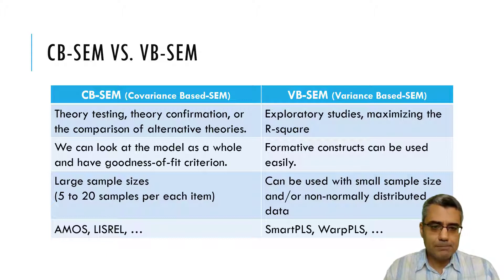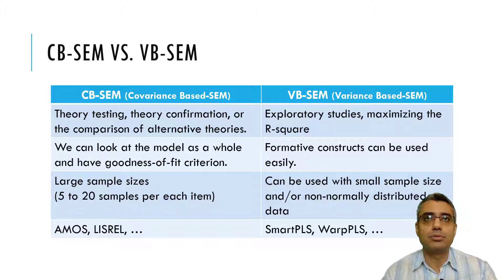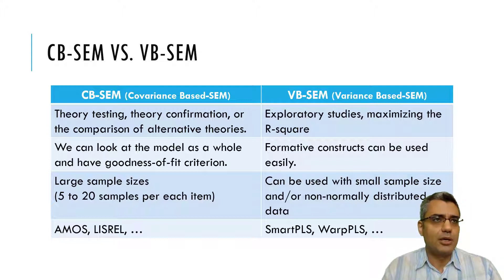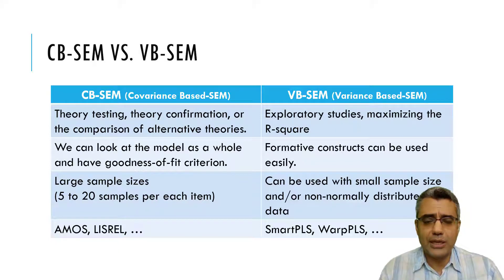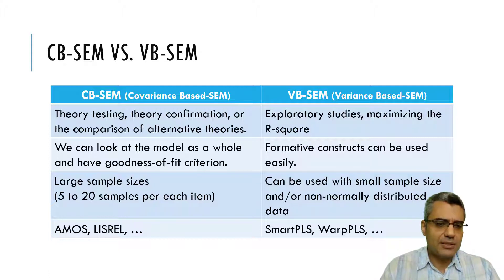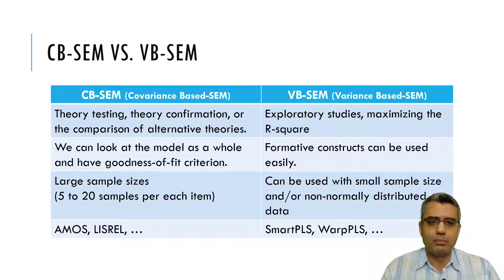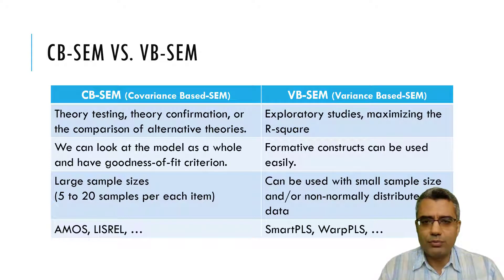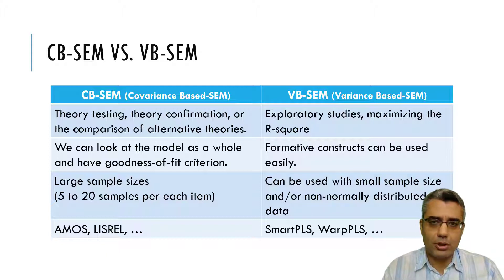Of course, there are some cases where the population is very small and it's very difficult to collect data, and you may only collect 50, 60, or 80 samples — in those cases, PLS can be a solution. The most popular software packages for CBSEM are AMOS and LISREL, among others. For VBSEM, the most commonly used one now is SmartPLS, along with other packages as well.